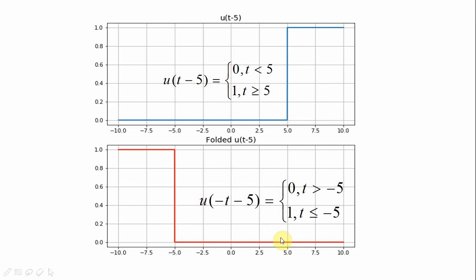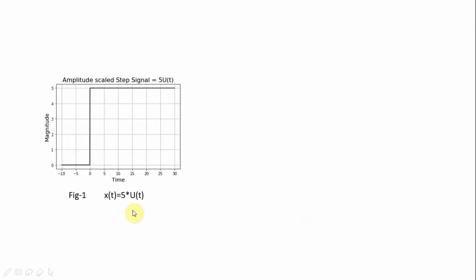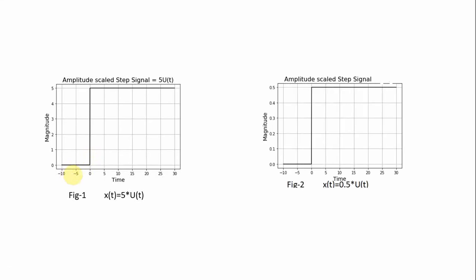For t greater than -5 we have the signal value 0, and it is 1 for t less than or equal to -5. We can also scale the signal — if we increase the magnitude of the step signal by 5, it becomes 5·u(t), whose value is 5 for t ≥ 0 and 0 for t < 0. We can even scale down the signal so that the amplitude is less than 1; for example, 0.5·u(t) is 0 for t < 0 and 0.5 for t ≥ 0.